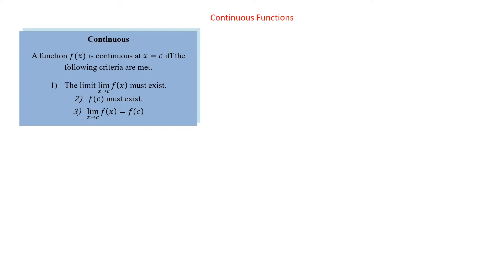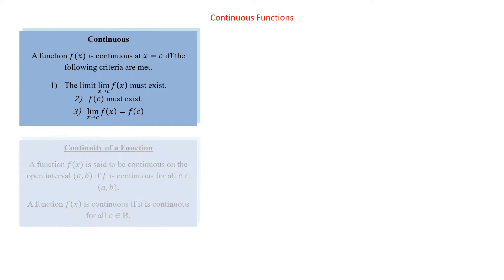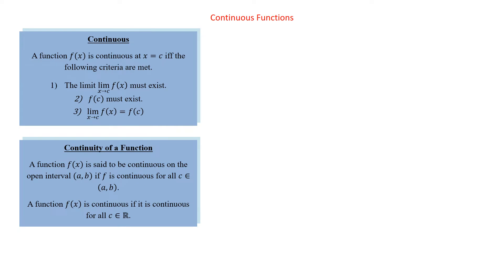One: the limit itself must exist. Two: the function must exist at that point. And three: the two things have to be equal. So if the limit doesn't exist, that's where you get the function going to a couple different places — that's where you get a jump discontinuity, which looks like a big break in the graph. If the limit doesn't exist, that happens — it's obviously not continuous.